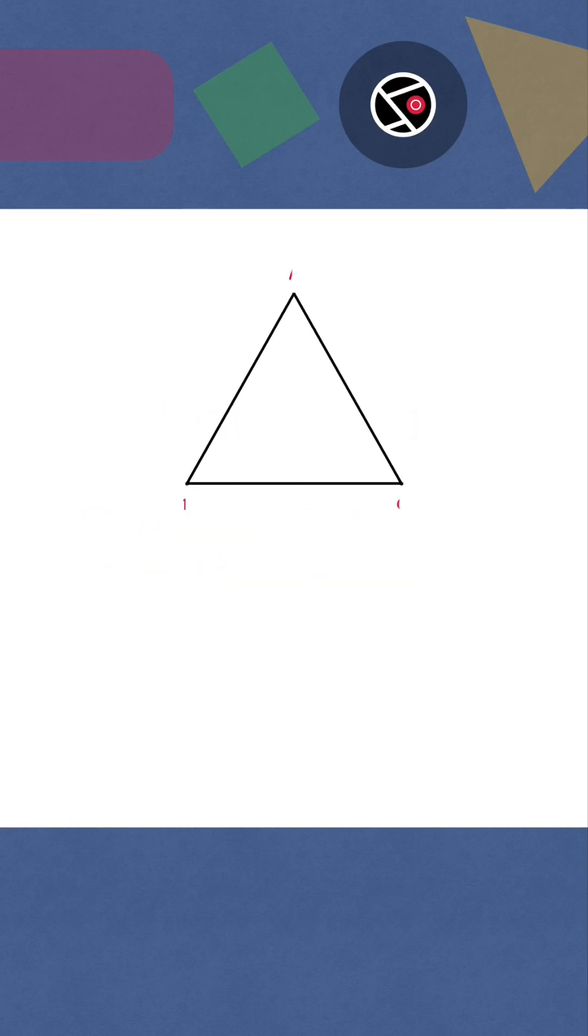We have a triangle ABC. Interior angles are x, y, and z. We have to prove that x plus y plus z equals 180 degrees.